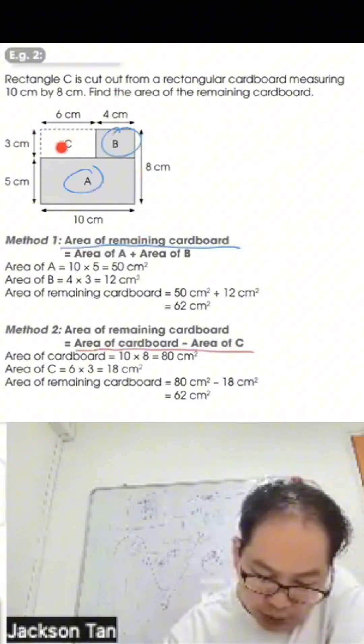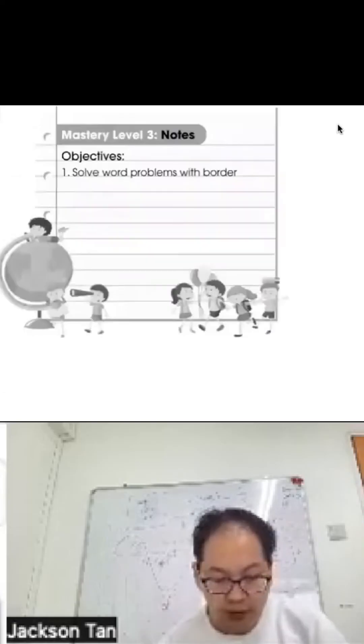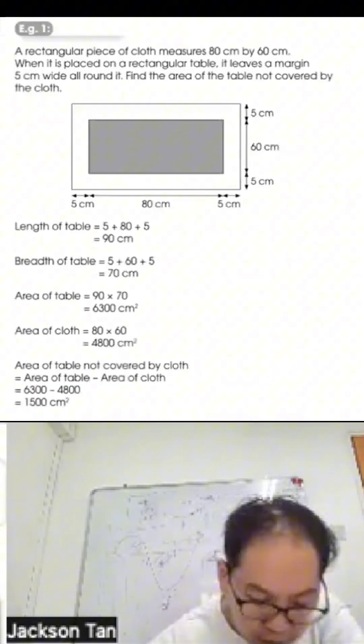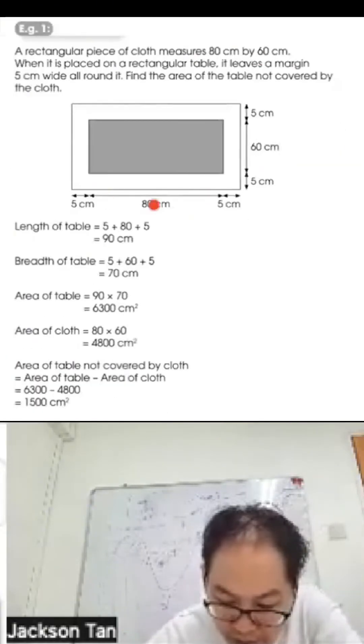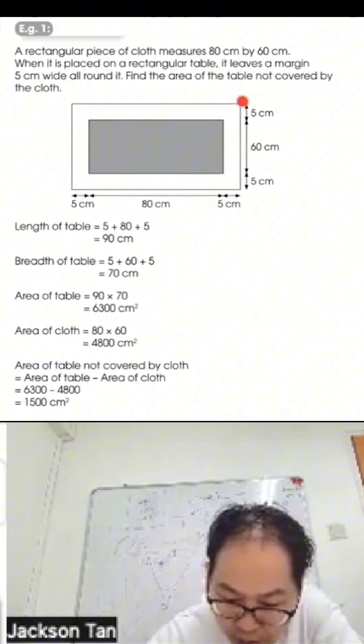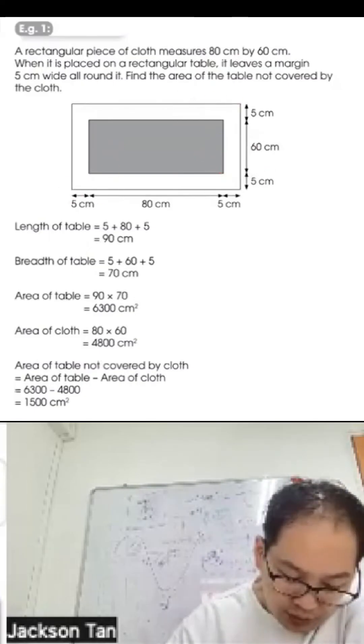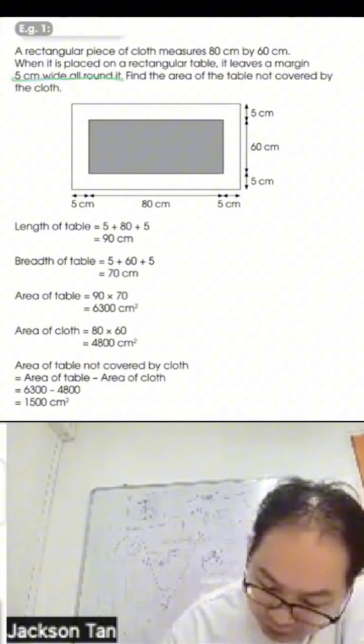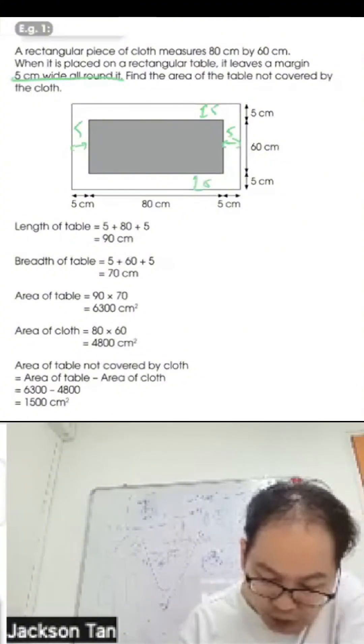Example 3: A rectangular piece of cloth measures 80 cm by 60 cm. When placed on a rectangular table, it leaves a margin of 5 cm all around. Find the area of the table not covered by the cloth. The length of the table is 80 plus 5 plus 5 equals 90 cm, and the breadth is 60 plus 5 plus 5 equals 70 cm.